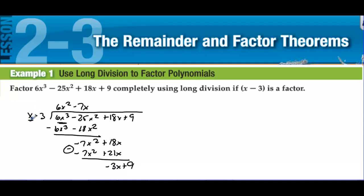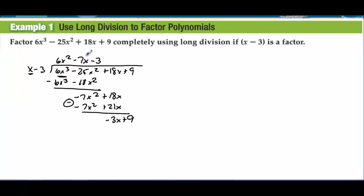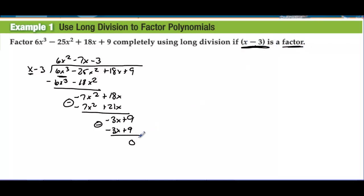We always subtract in long division, and 18 minus 21 is negative 3x, then we bring down the plus 9. What do we take times x to get negative 3x? We multiply by negative 3. Negative 3 times x gives us negative 3x, and negative 3 times negative 3 is plus 9. When we subtract, we get 0. We knew that would be 0 because we were told x minus 3 is a factor — if it's a factor, the remainder should always be 0.